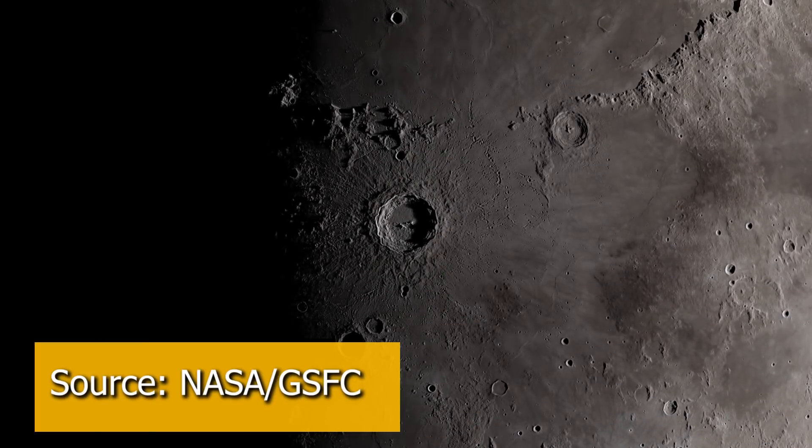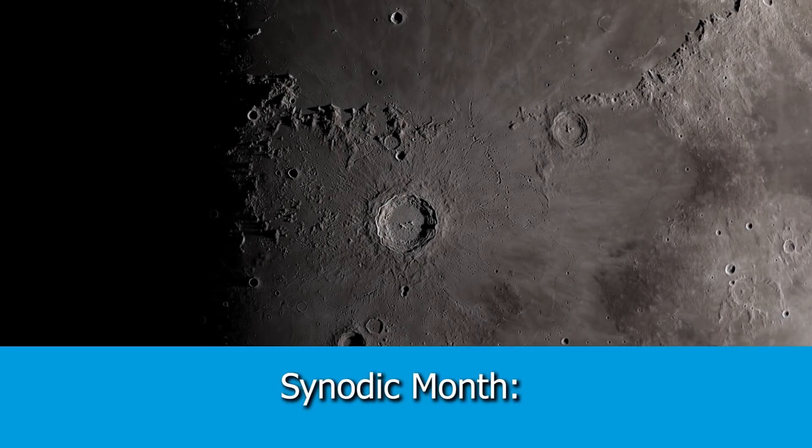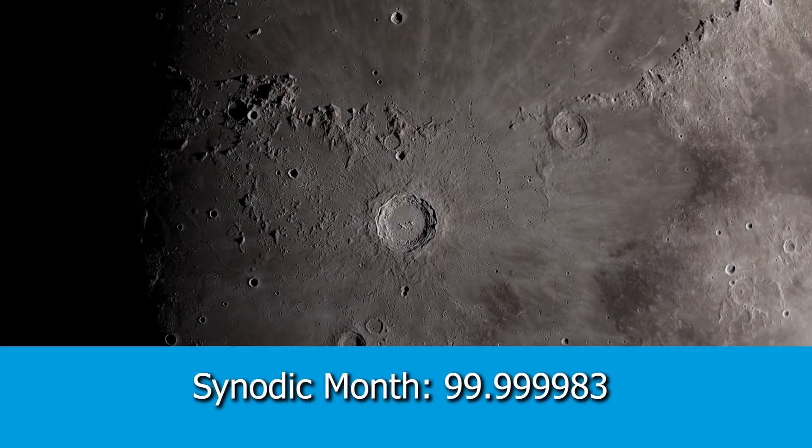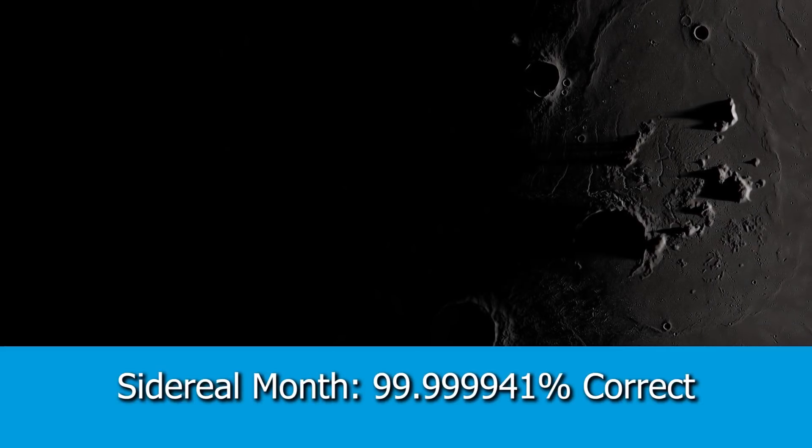The sidereal month is timing how long it takes the moon to complete one full circle around the Earth. But for a synodic month, the Earth is also orbiting around the Sun. If we go up until the amount of time it takes for a sidereal month, it hasn't aligned yet. It still has to go a little bit further because of how much the Earth has moved in its orbit. It turns out the Babylonians were 99.999983% of the right answer for synodic month.